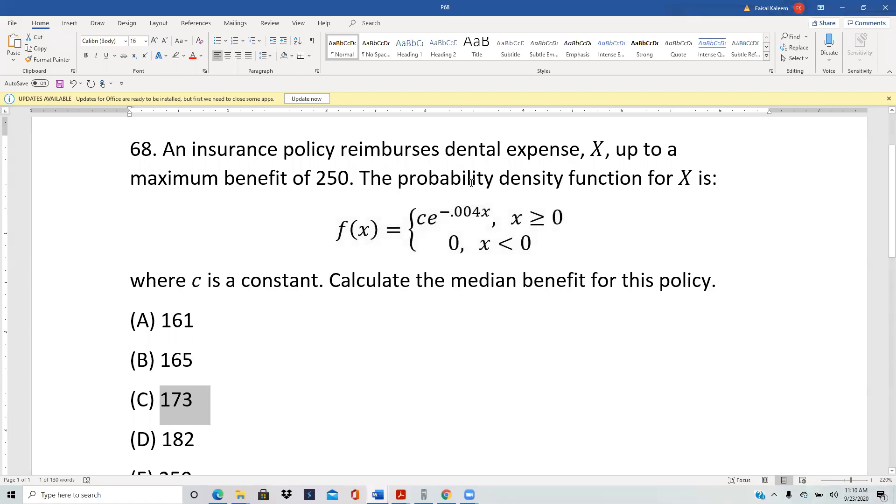An insurance policy reimburses dental expense x up to a maximum benefit of 250. The PDF for x is here. Calculate the median benefit for this policy.